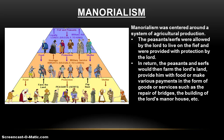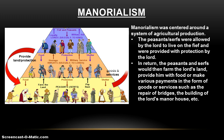Manorialism is largely centered around a system of agricultural production. The way it works is the peasants and serfs are allowed to live on the fief by the lord, and the lord provides them with protection. The feudal lord allows these commoners — these peasants and serfs — to live on the land and provides them with protection in what is a dangerous world. In return, the peasants and serfs agree to work on the land, working the crops, taking care of the livestock, and providing the feudal lord with food, with crops, making various payments in the form of goods and services.